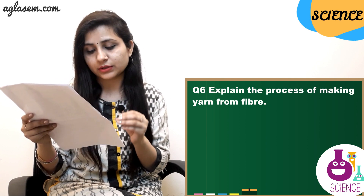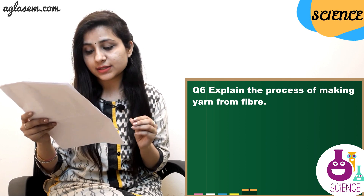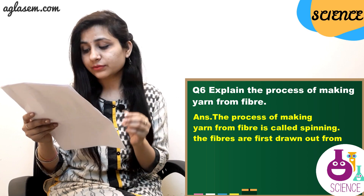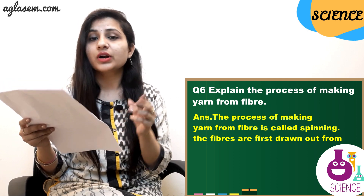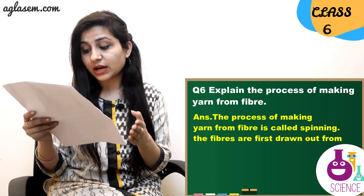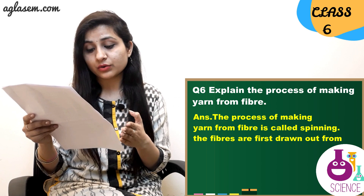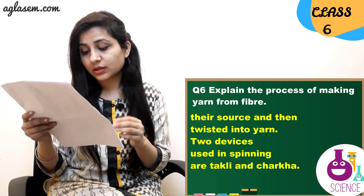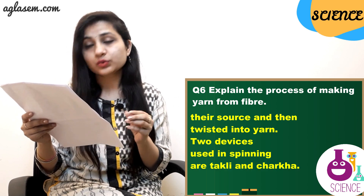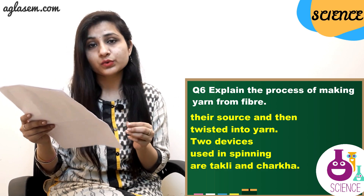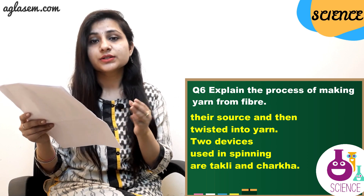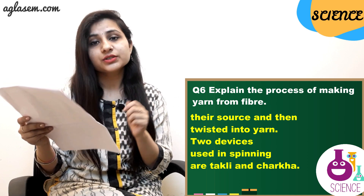Question 6: Explain the process of making yarn from fiber. The process of making yarn from fiber is called spinning. The fibers are first drawn out from their source and then twisted into yarn. Two devices used in spinning are the takli and the charkha.